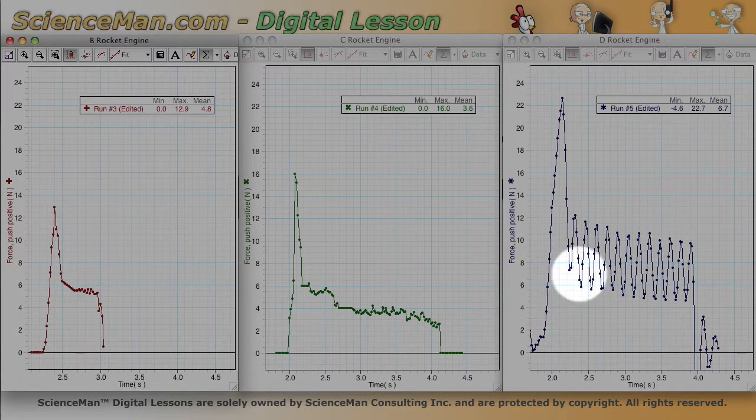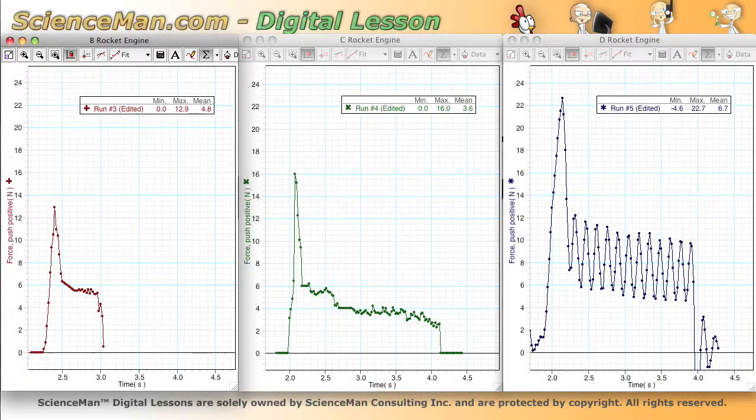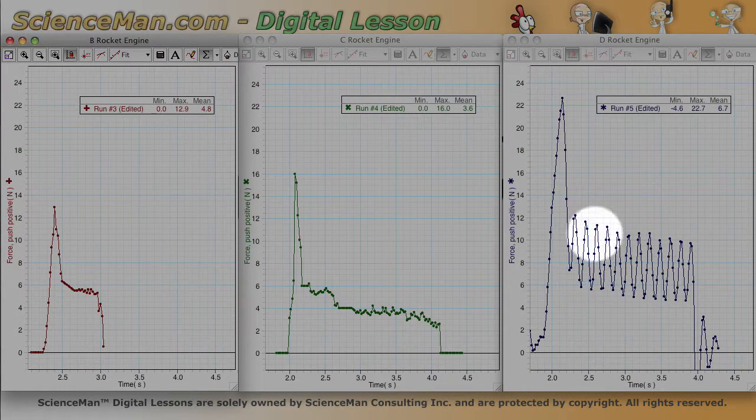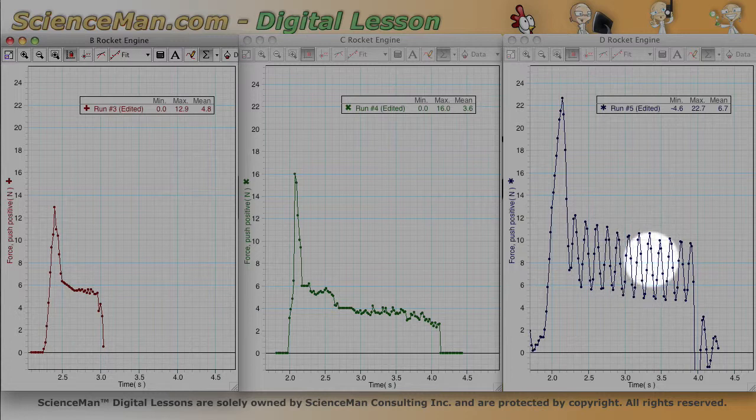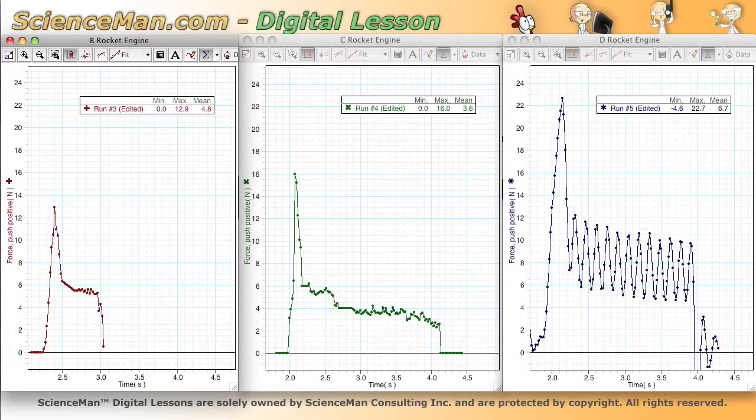The D engine runs about the same as the C engine, but at a much higher force level. And it's interesting, this D engine caused a kind of harmonic resonance here as it was burning. And I believe that's because the rocket was so powerful, it was making the small lab stand vibrate back and forth as the rocket engine was burning.